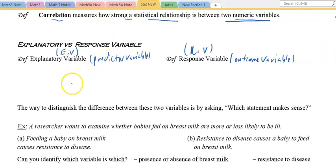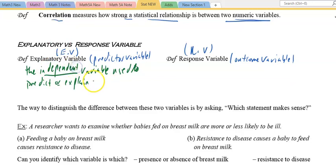The EV, which is the explanatory variable, is the predictor variable. This is the independent variable used to predict or explain differences in a response variable.